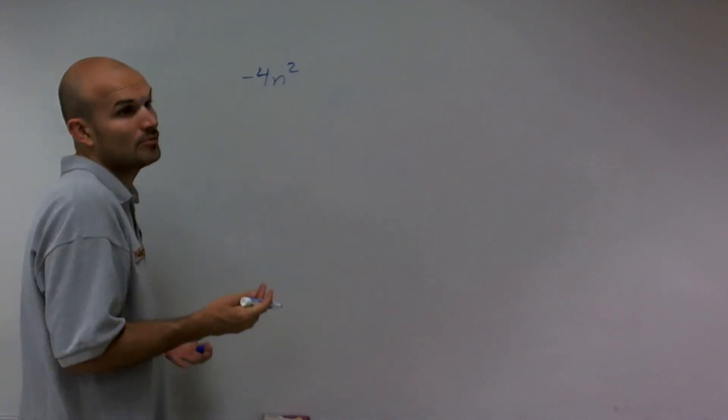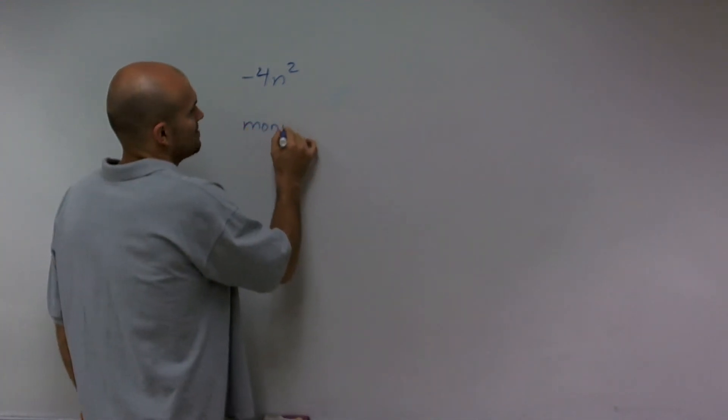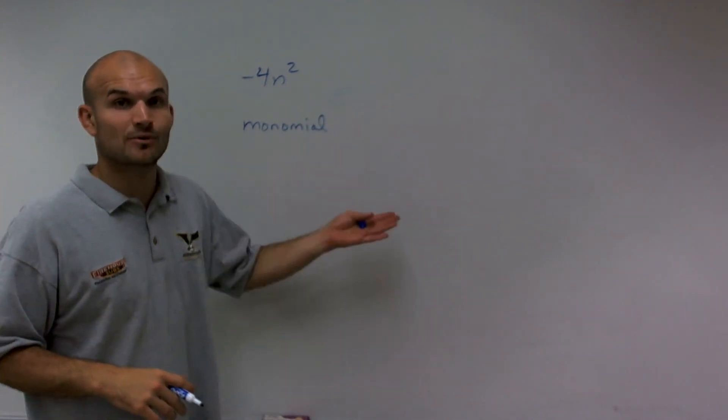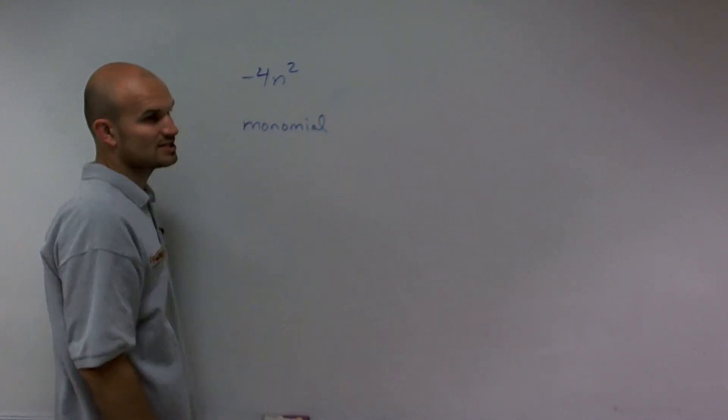So this is actually just going to be a monomial, meaning I just have one collective term together. This is a monomial because the definition of a monomial is a number, or a variable, or the multiplication of a number and one or more variables, which is exactly this.